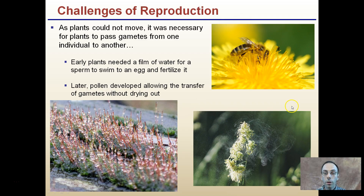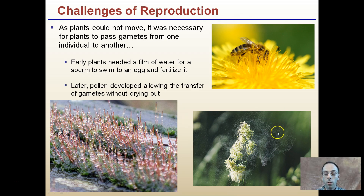Another challenge plants faced in the terrestrial environment is reproduction. As plants cannot move, it was necessary to pass gametes from one individual to another. Early plants needed a film of water for sperm to swim to the egg and fertilize it — as seen in mosses, which grow very low to the ground. Later, pollen was developed, allowing the transfer of gametes without drying out. Plants have also developed ways to use air currents and pollinators to assist reproduction, representing key adaptations in moving from aquatic to dry land environments.